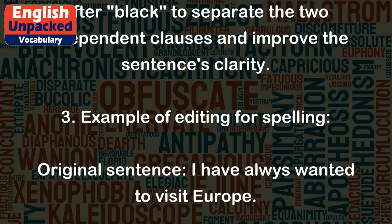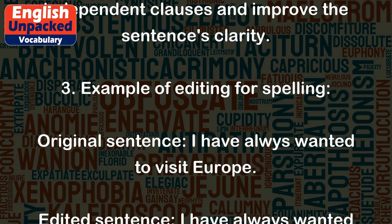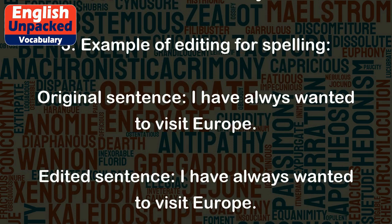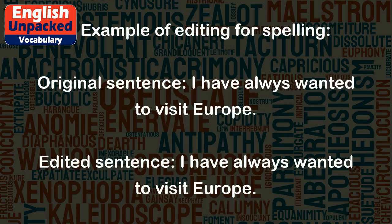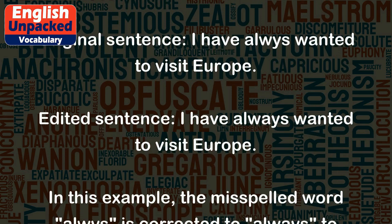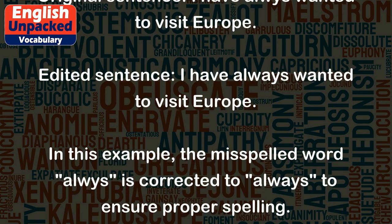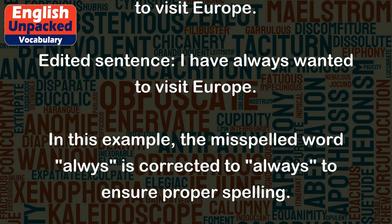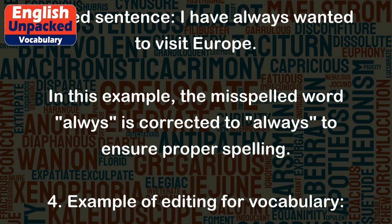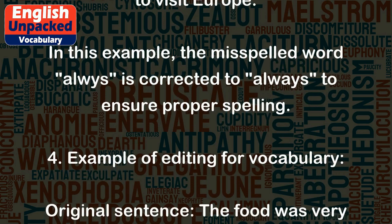Example 3: Editing for spelling. Original sentence: "I have always wanted to visit Europe." Edited sentence: "I have always wanted to visit Europe." In this example, the misspelled word "always" is corrected to "always" to ensure proper spelling.